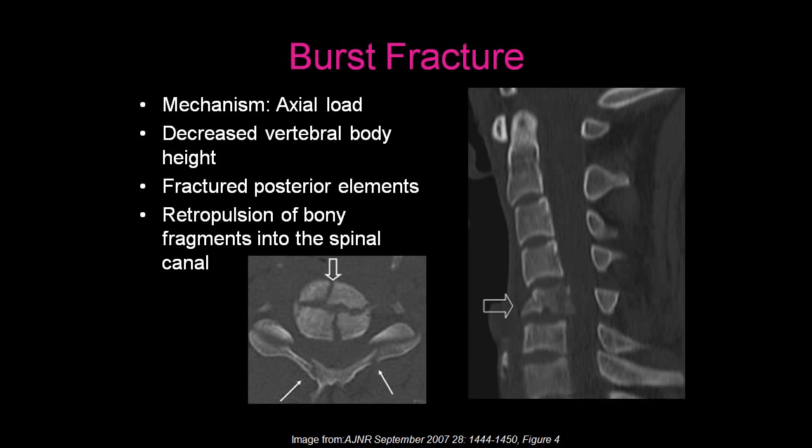A burst fracture results from an axial load. This results in decreased vertebral body height as well as fractured posterior elements. You can even see retropulsion of bony fragments into the spinal canal — a very important sign, because these fragments can result in injury to the cervical spinal cord.